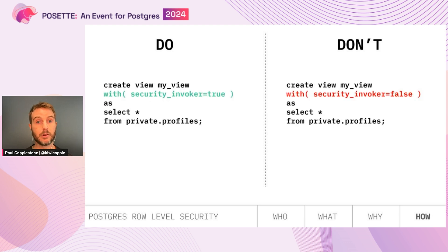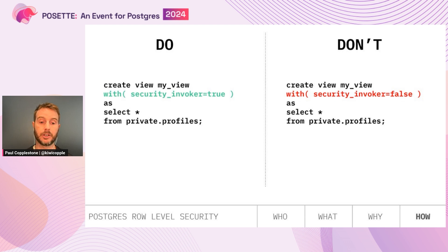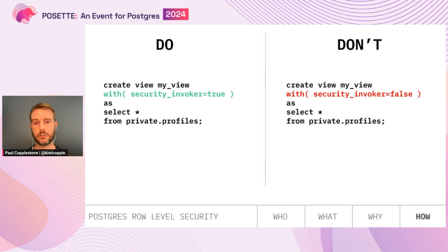Postgres now has support for RLS in views. This works through SECURITY INVOKER versus SECURITY DEFINER. From PG 15 and above you can specify views with SECURITY INVOKER = TRUE. With SECURITY INVOKER false, the view assumes the grants of whoever created it. With SECURITY INVOKER true, the view assumes the RLS rules of the role calling it. So if your view references a private profiles table, it will apply the RLS rules attached to that profiles table. I generally recommend using this setting almost always these days.